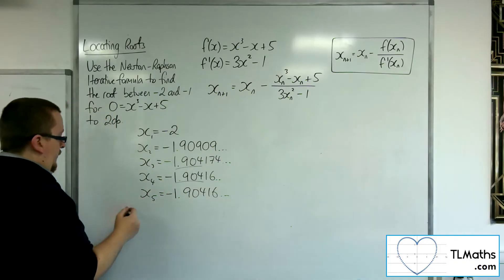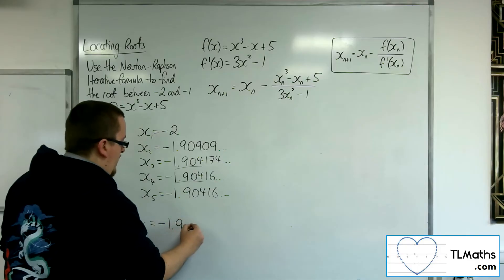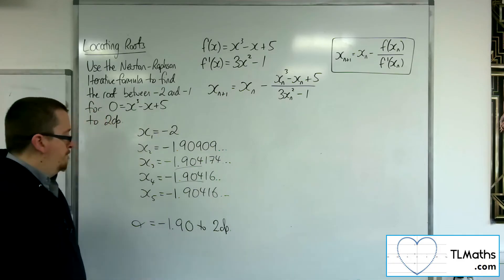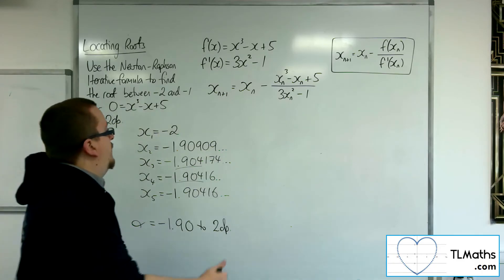So I can say that the root is -1.90 to two decimal places. So that's starting at -2.